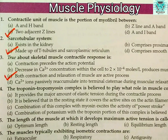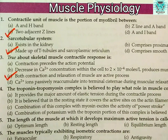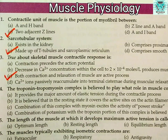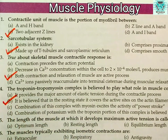The troponin-tropomyosin complex plays what role in the muscle contractile process? Options: (a) provides the major amount of elastic tension during the contractile process, (b) in the resting state it covers the active site on the actin filament, (c) combination of the complex with myosin excites the power stroke, or (d) combination of potassium with the troponin portion triggers muscle contraction. The right answer is (b): in the resting state it covers the active site on the actin filament, and that's why there is no contraction in the resting state.